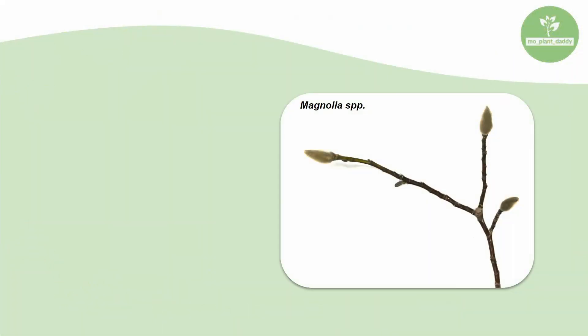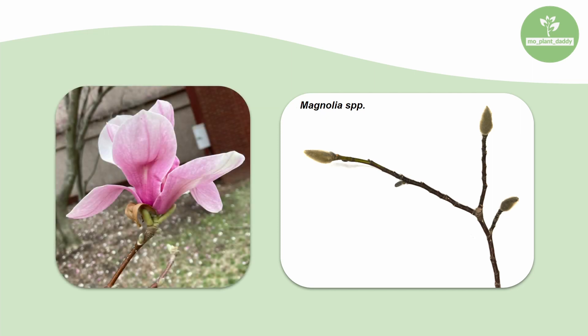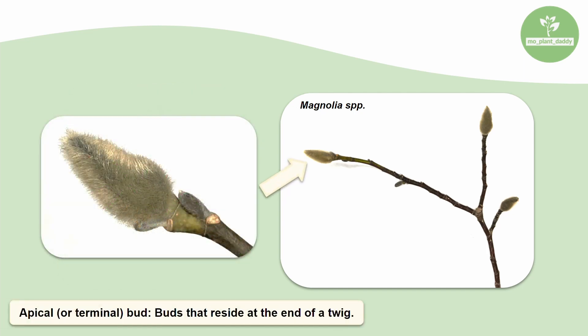This is a twig from a magnolia tree, which we are going to use to learn how to distinguish apical and lateral buds on a twig. In case you aren't familiar with what a magnolia tree looks like, they produce these beautiful pink flowers in the early spring. Apical, or terminal buds, are buds that reside at the end of a twig. On a magnolia twig, the apical buds are large and they are pubescent.